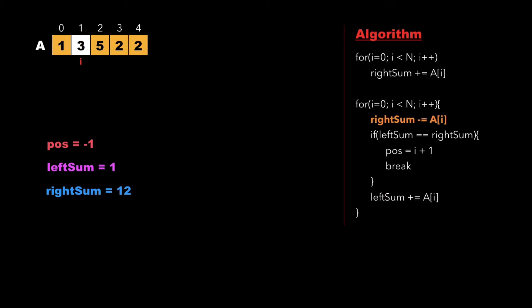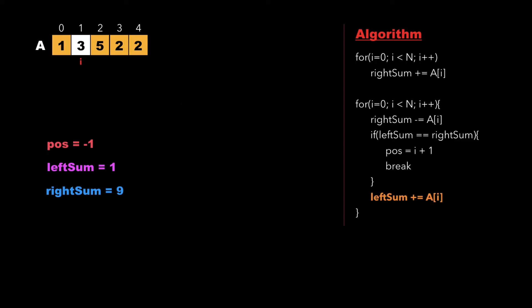Moving to a[1], we calculate the updated right sum as 9. We check whether left sum equals right sum, that is whether 1 equals 9 — it does not — so we move further and update left sum as 1 plus 3, which is 4. This will be the left sum value for our next element, a[2].